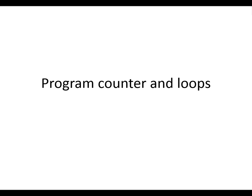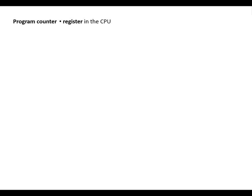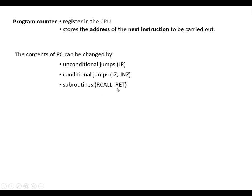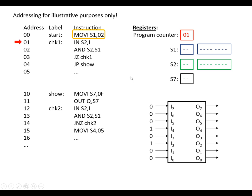The program counter is a register in the CPU and it stores the address of the next instruction to be carried out. We can change the contents of the program counter when we're doing unconditional jumps, conditional jumps, and when calling and returning from subroutines. This video will be featuring jumps.